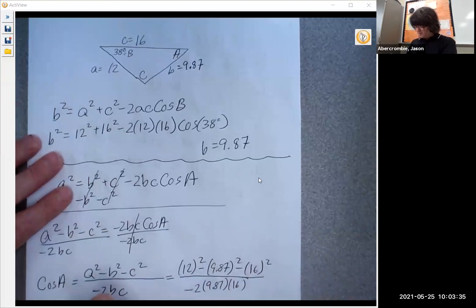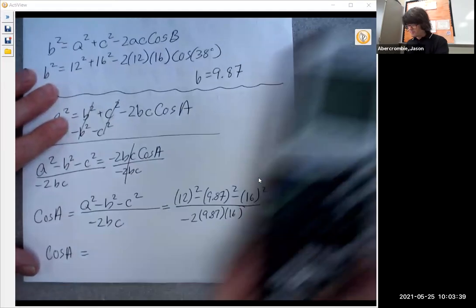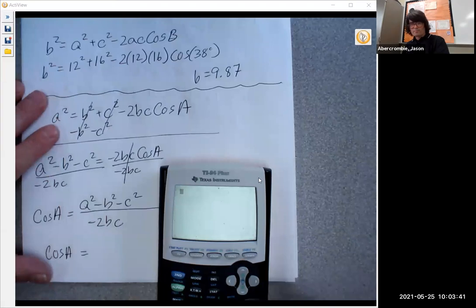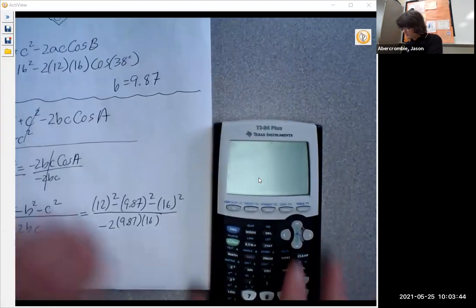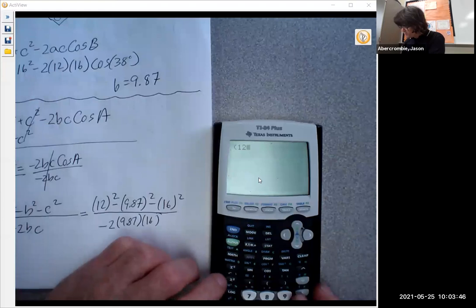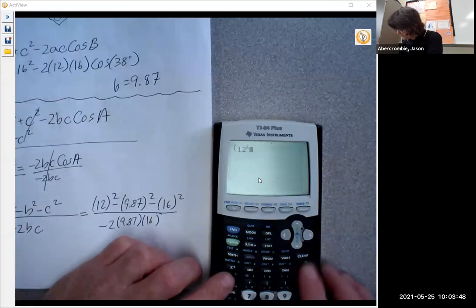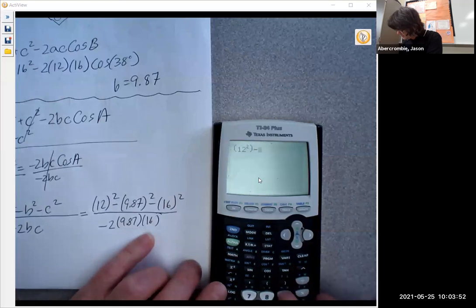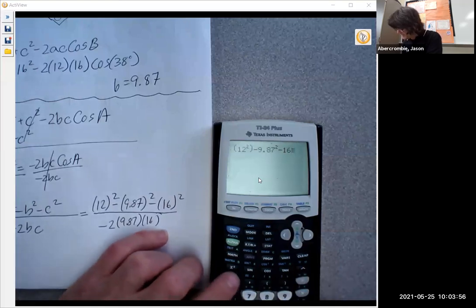We're going to get cosine A equals, let's get that number. I'll just do it right here with you. So we get 12 squared, and then we have minus 9.87 squared minus 16 squared. That's the top. Divided by negative 2 times 9.87 times 16.